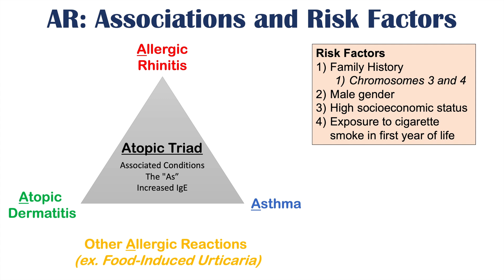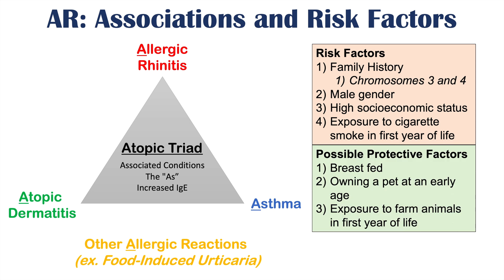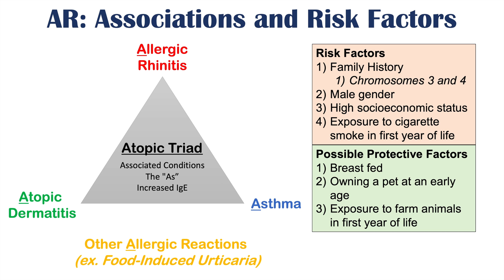There are also protective factors that may reduce the risk of getting allergic rhinitis. These include breastfeeding, owning a pet at an early age, and exposure to farm animals in the first years of life. These are possible protective factors not only for allergic rhinitis, but also for atopic dermatitis and asthma. Exposures in early life seem to be very important for these atopic triad conditions.